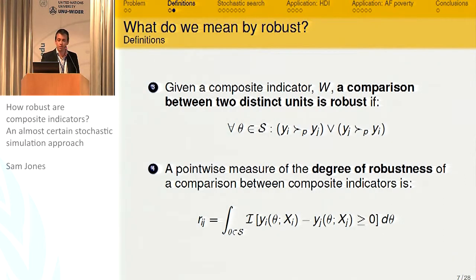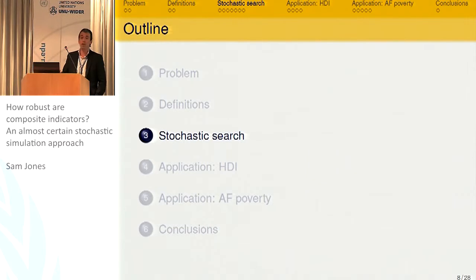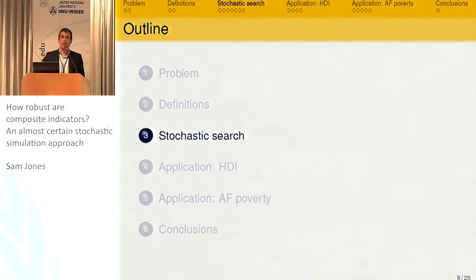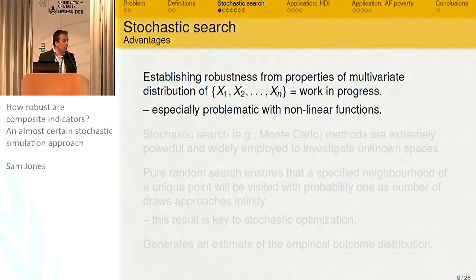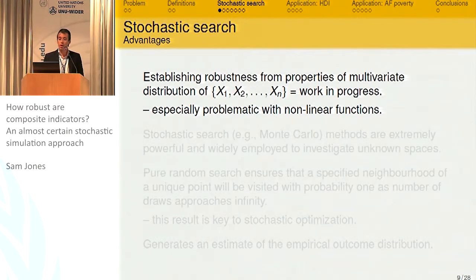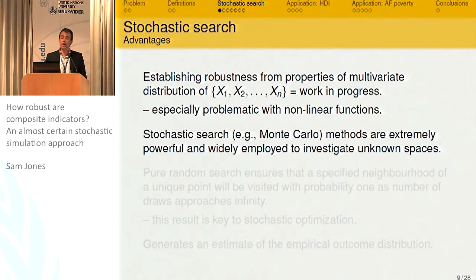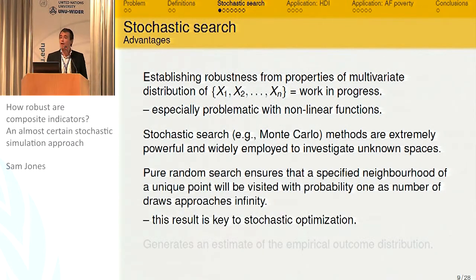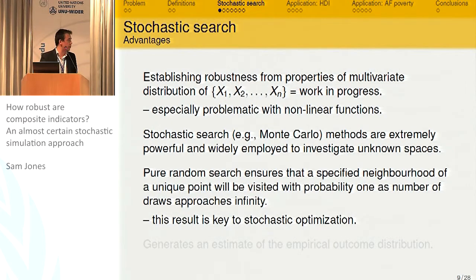The question is how do we go about looking at this? The proposal here is to use stochastic search: taking random draws from the parameter space and evaluating the composite indicator for each draw. The advantages are that establishing robustness from properties of multivariate distributions is highly problematic, particularly with nonlinear functions. Ideally we would like an analytical solution — we haven't got one. Stochastic search is used extremely widely where we have these kind of unknown complex spaces. As long as we can take an infinite number of draws, we're guaranteed to find the result — we're bound to sample every point in the sample space.